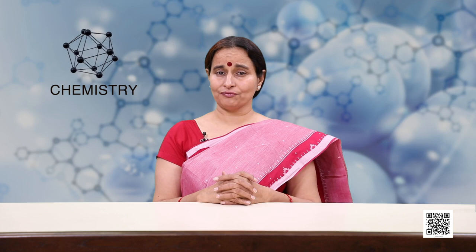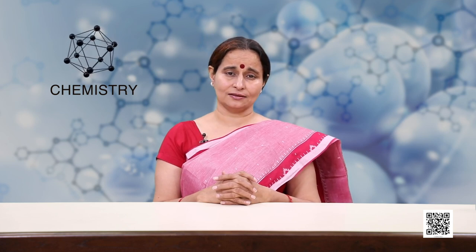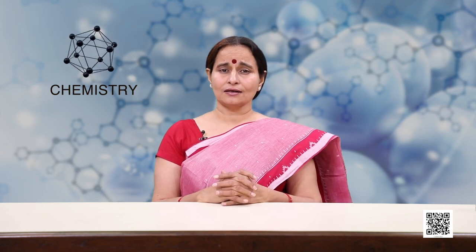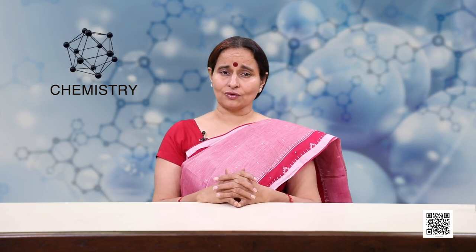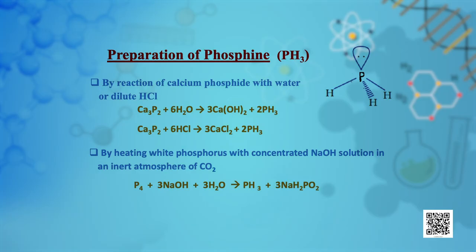Now we will discuss about phosphine, an important compound of phosphorus. It is a colorless gas with a rotten fish smell and is highly poisonous. Phosphine is prepared by the reaction of calcium phosphide with water or with dilute hydrochloric acid. In the laboratory, it can be prepared by heating white phosphorus with concentrated sodium hydroxide solution in an inert atmosphere of carbon dioxide.